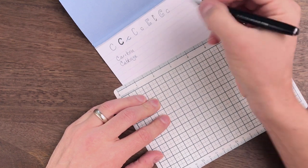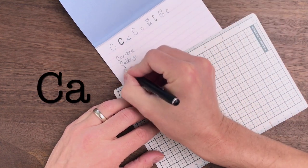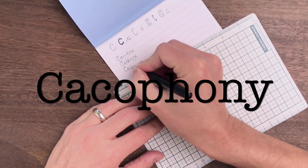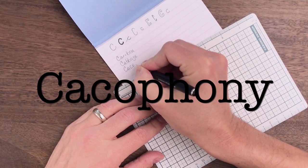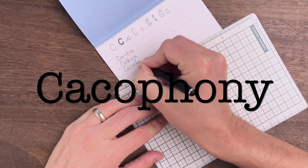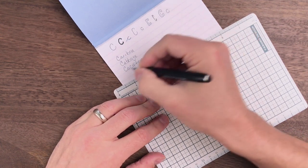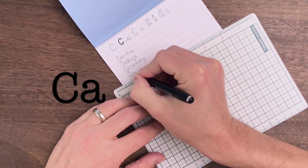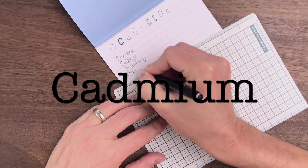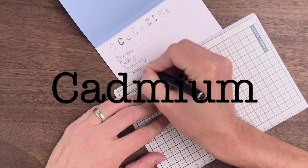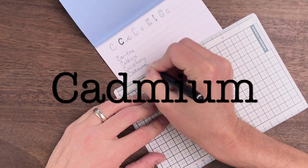Third word, cacophony, C-A-C-O-P-H-O-N-Y. The fourth word, cadmium, C-A-D-M-I-U-M.